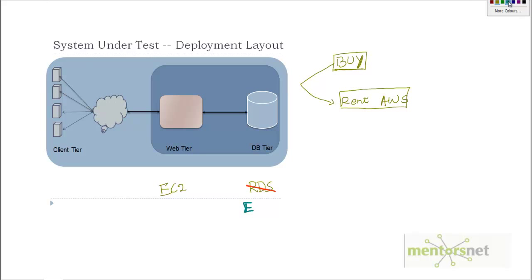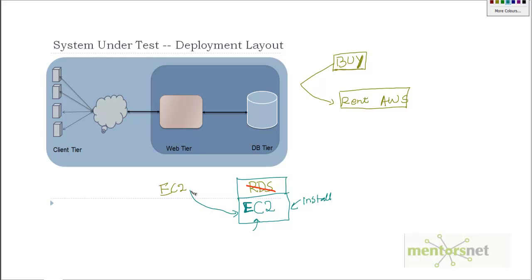If you want to install your own database, I recommend you first reserve a machine using EC2, then download Oracle or MySQL software and configure it yourself — you will learn better that way. So there are two options: use the RDS service, or use EC2 to get a machine and install the database on top of it. I recommend the second option, but for this class I will use EC2 for the web tier and RDS for the database.